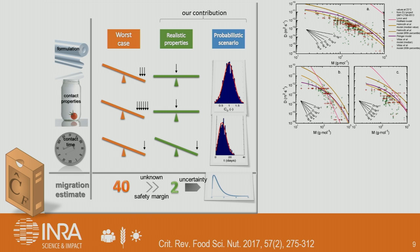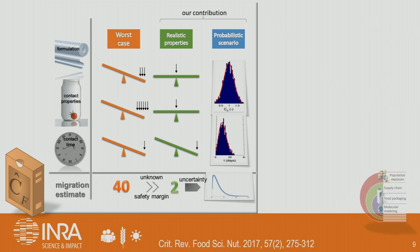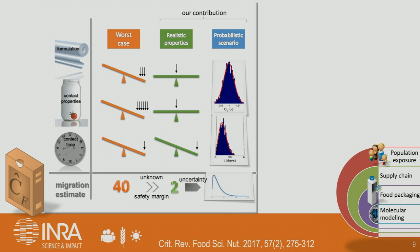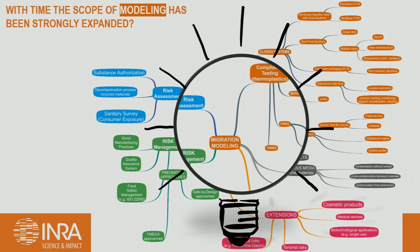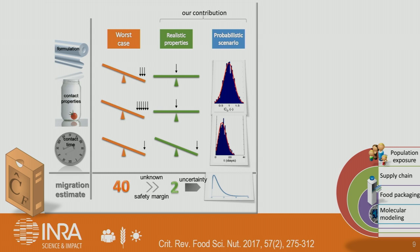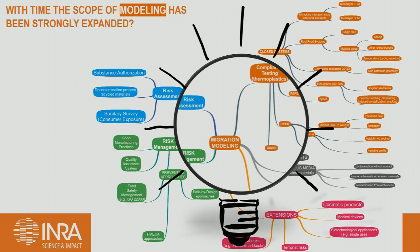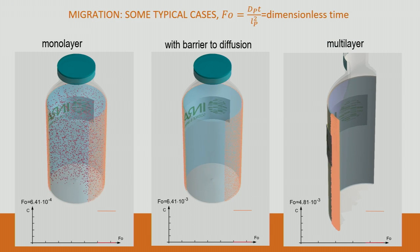If you do really strong science, you can extend modeling to many aspects beyond simple migration modeling — covering food packaging, the supply chain, and population exposure. Migration modeling is used for compliance and for risk assessment, and I will show you some examples.